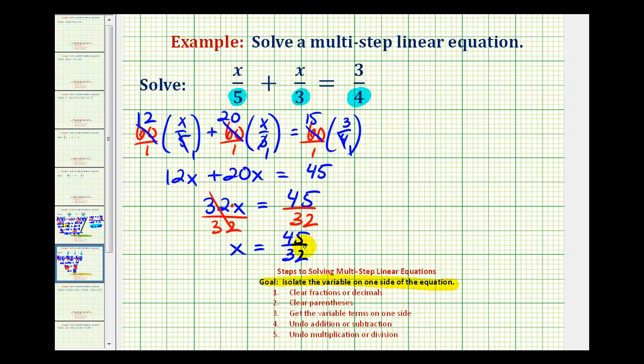If we wanted this as a mixed number, we'd have to divide forty-five by thirty-two. There's one thirty-two in forty-five with a remainder of thirteen. So this would be equivalent to one and thirteen thirty-seconds.